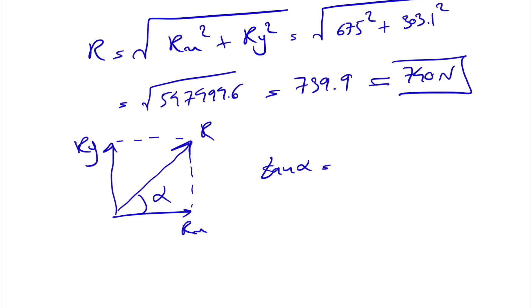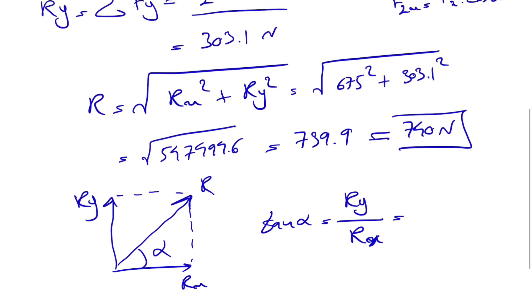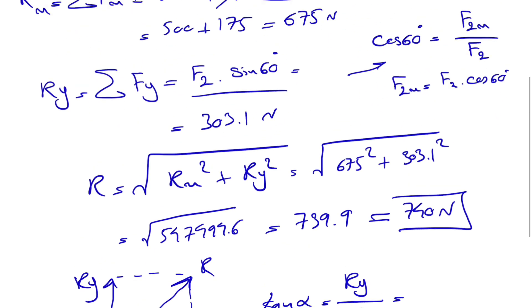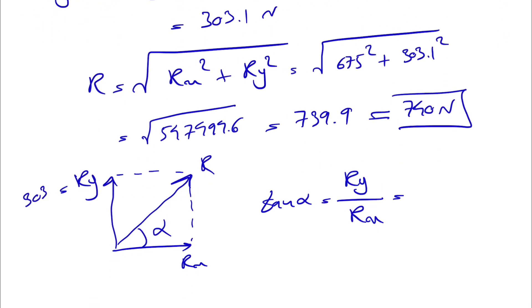If we do the tangent of alpha, we'll have Ry over Rx. Our Ry would be 303.1 and our Rx was 675. So we have Ry which is 303.1 divided by 675, and our alpha will be the tangent inverse of 303.1 divided by 675. That would give us 24.2 degrees, and that would be the final answer for this question.